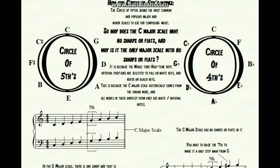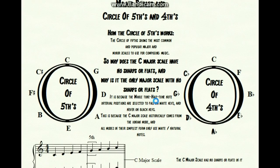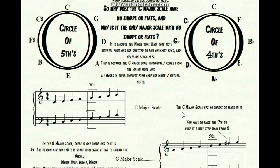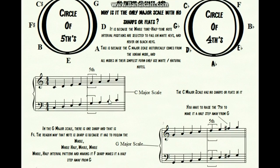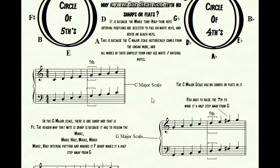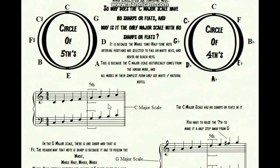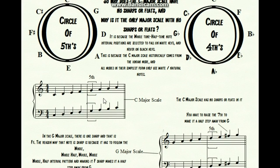I also have some more information here to answer that question. There's a little side note that says the C major scale has no sharps or flats in it. And then the fifth — the fifth in C major is G.